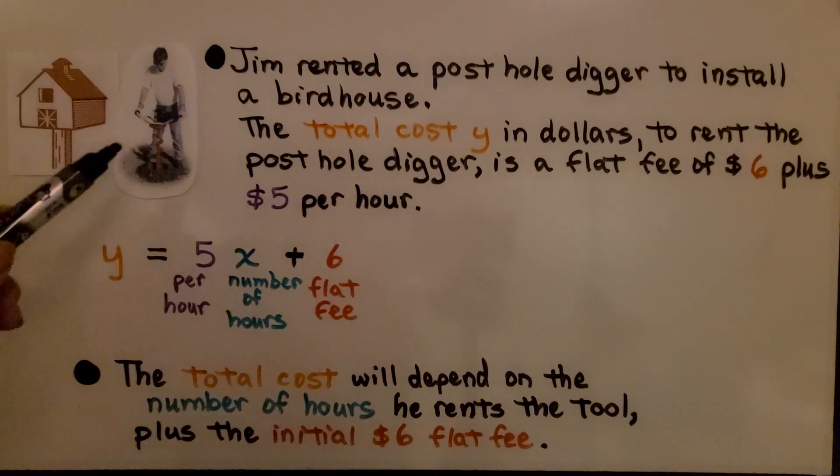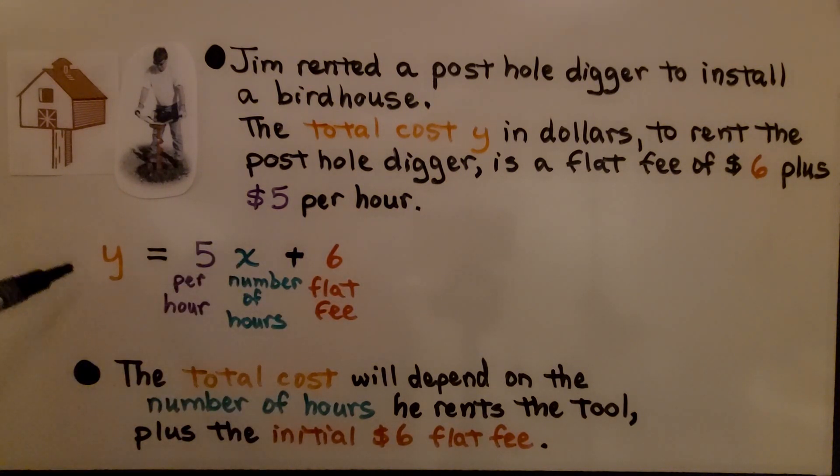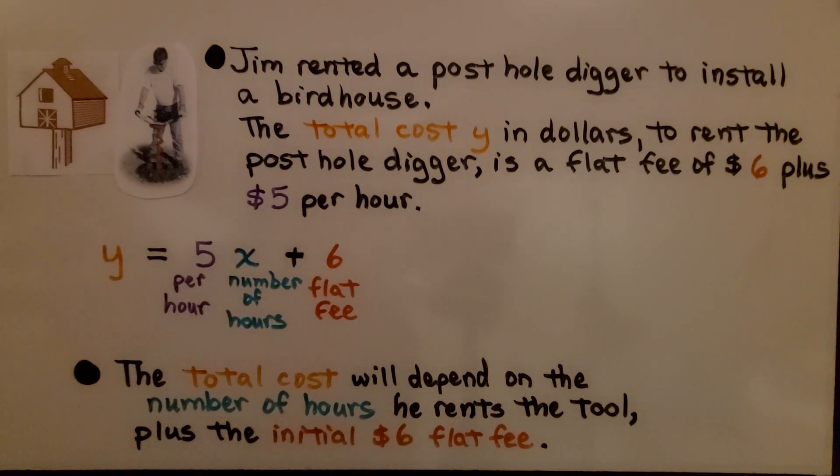Jim rented a post hole digger to install a birdhouse. The total cost y in dollars to rent the post hole digger is a flat fee of $6 plus $5 per hour. Our equation is the total cost y equals that $5 per hour times x, the number of hours he's going to rent it, plus that $6 flat fee.